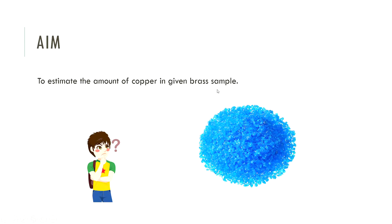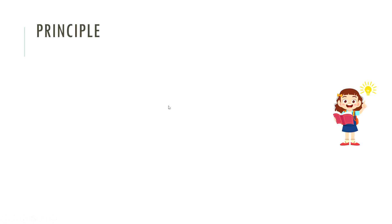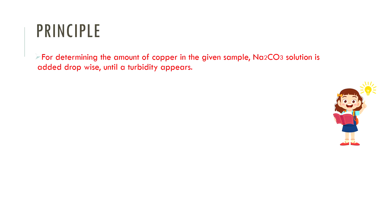The brass sample is provided as a solution and we are going to determine the amount of copper in it. We will follow certain principles. Na2CO3 solution is added dropwise initially to determine the amount of copper in the sample.